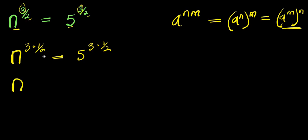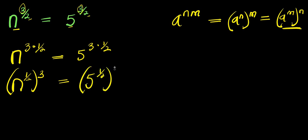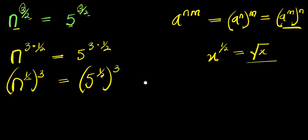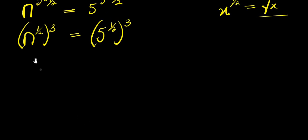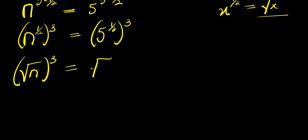So we have n to the power of 1 over 2, and this is raised to the power of 3, equals 5 to the power of 1 over 2 raised to the power of 3. Now, x to the power of 1 over 2 equals the square root of x, so applying that here gives us square root of n raised to the power of 3 equals square root of 5 raised to the power of 3.